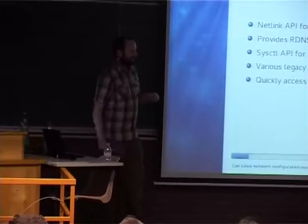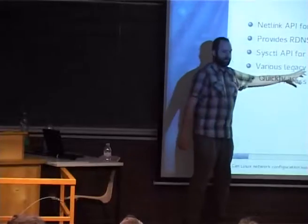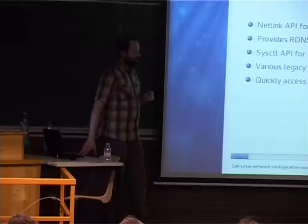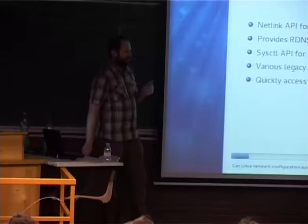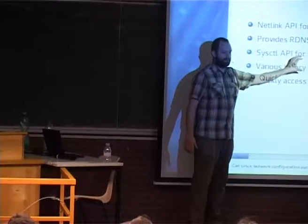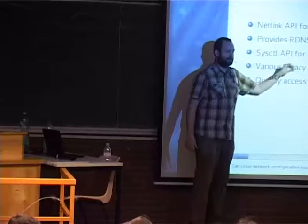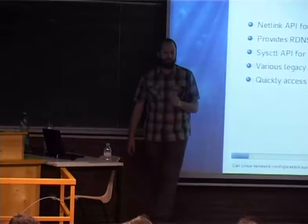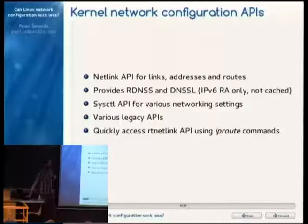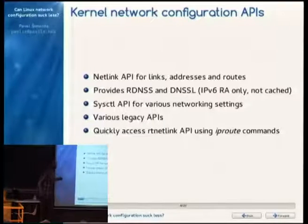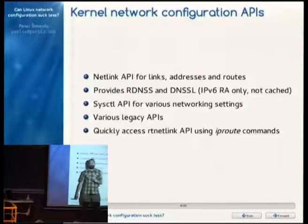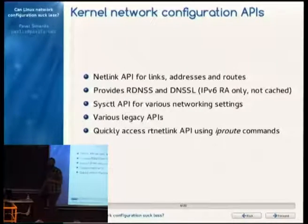There are various legacy APIs, usually ioctl or similar, and various tools use these old APIs. There are sometimes problems where using the old APIs gives different behavior, so for tests it's best to use current tools. You can use the iproute2 package and the ip command, which directly uses netlink — it's the simplest way to test.